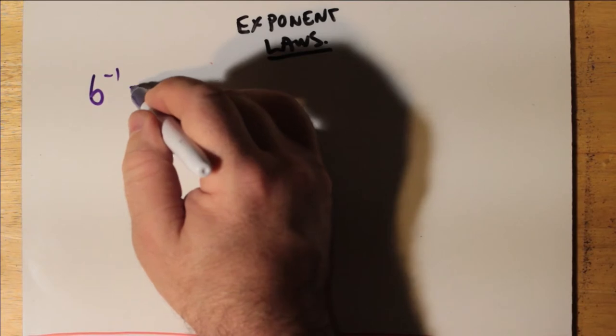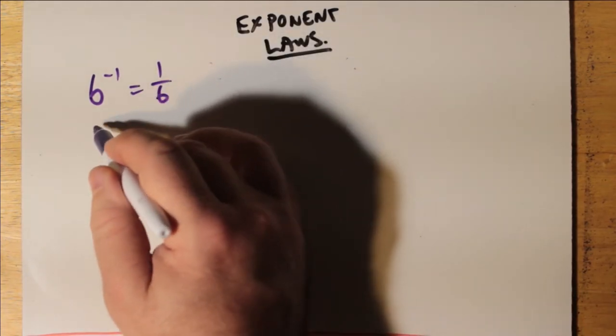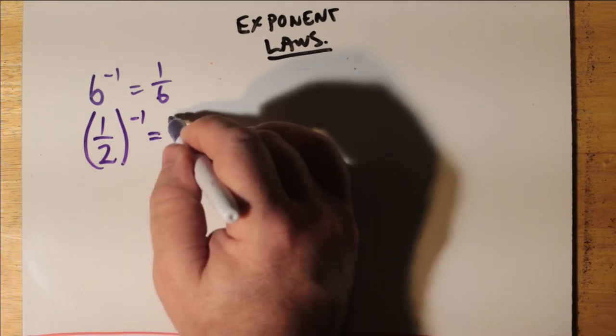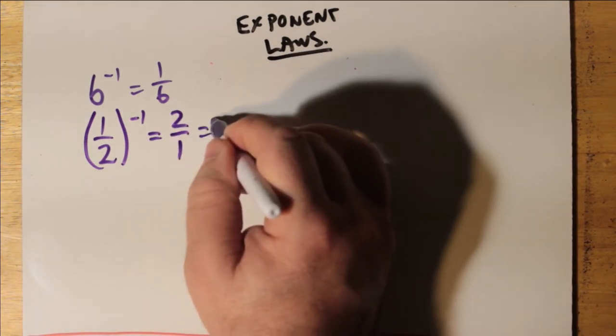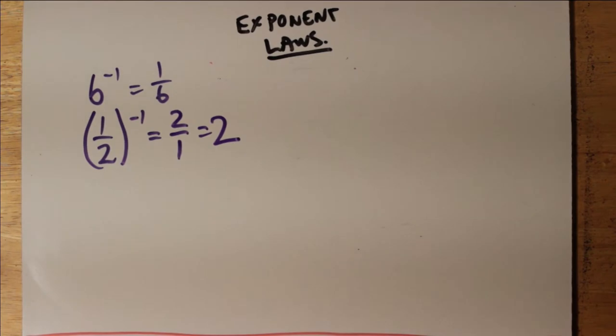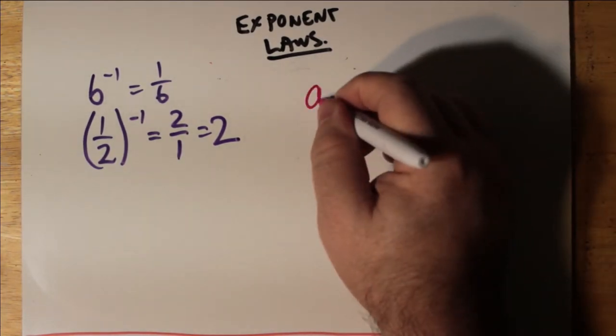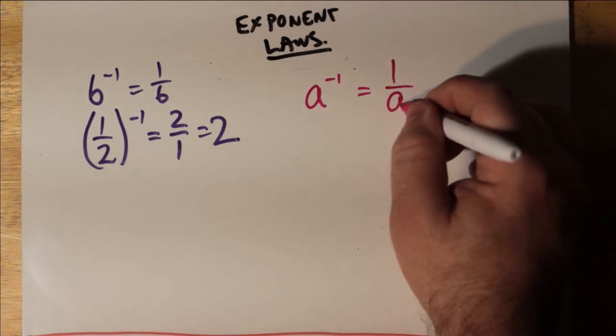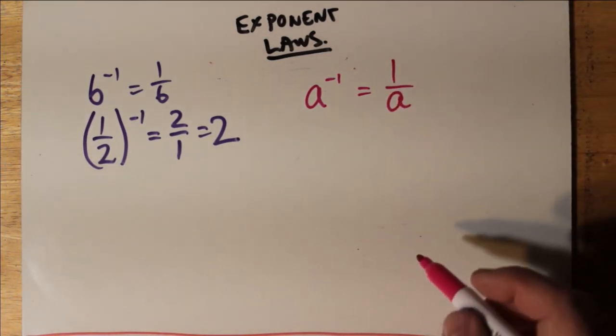So that means that anything to the power of negative 1 is just the reciprocal of itself. So 6 to the power of negative 1 is 1 over 6. 1 half to the power of negative 1 is the reciprocal of 1 half. That's 2 over 1, which is 2. Or a to the power of negative 1 is 1 over a, such that a is not equal to 0.